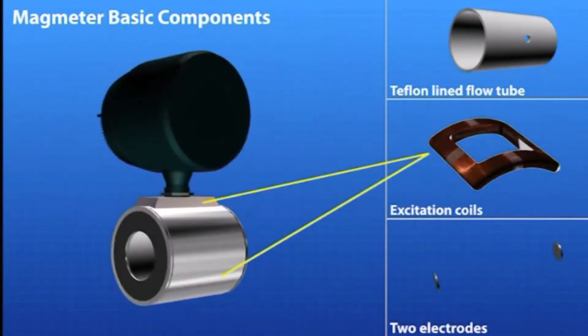Current is applied to the coils in the magmeter to generate a magnetic field within the flow tube. As a conductive fluid flows through the meter, an electromotive force is generated. This force is detected by the electrodes, and the resulting value is converted to flow rate.